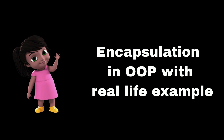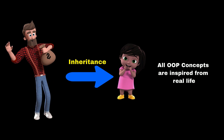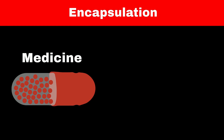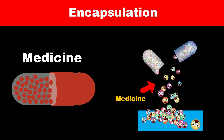Encapsulation is also an OOP concept inspired by real life. Have you ever seen a capsule used for medication? It is made up of two components: the medication itself and the outer shell, which is used to protect the medication from various factors like cold and hot environments. So the important medication is wrapped into a container called a capsule to protect it from outside contact. This concept is called encapsulation.